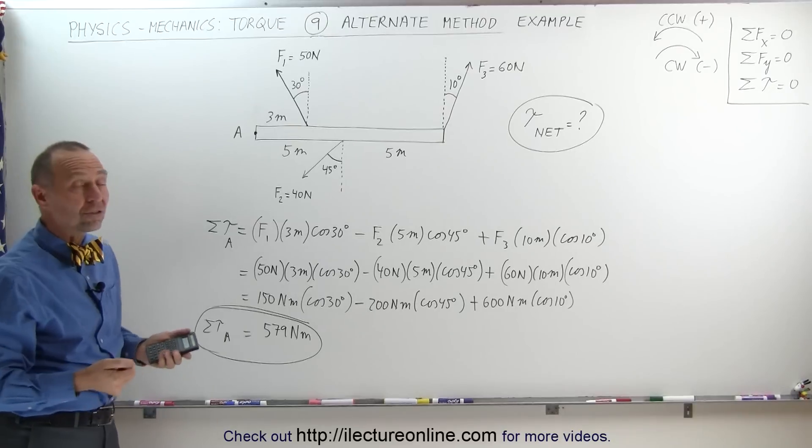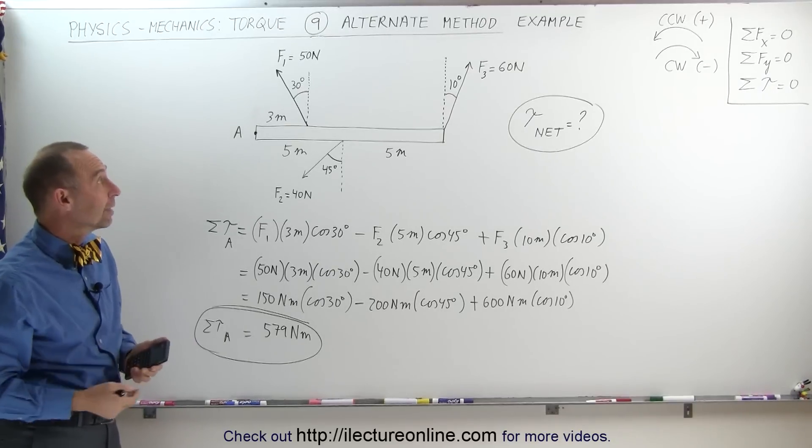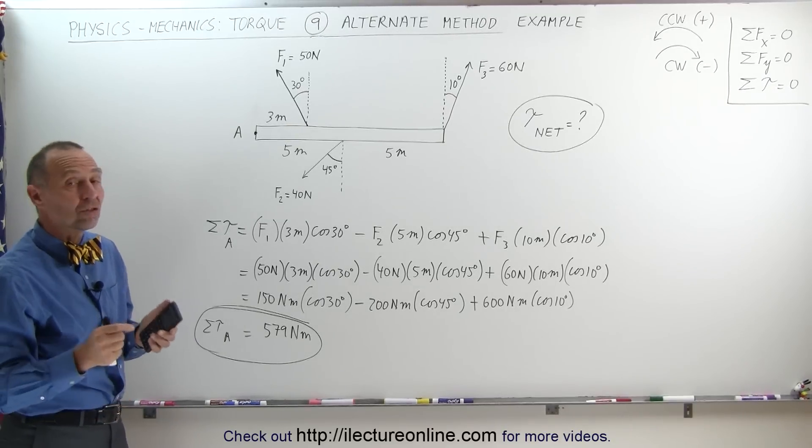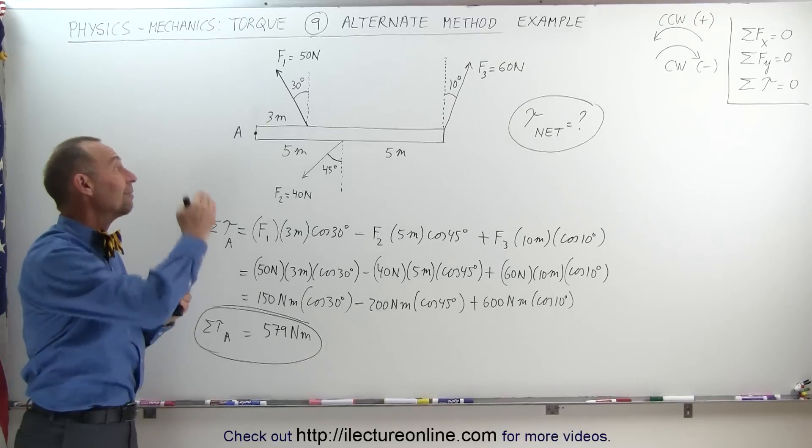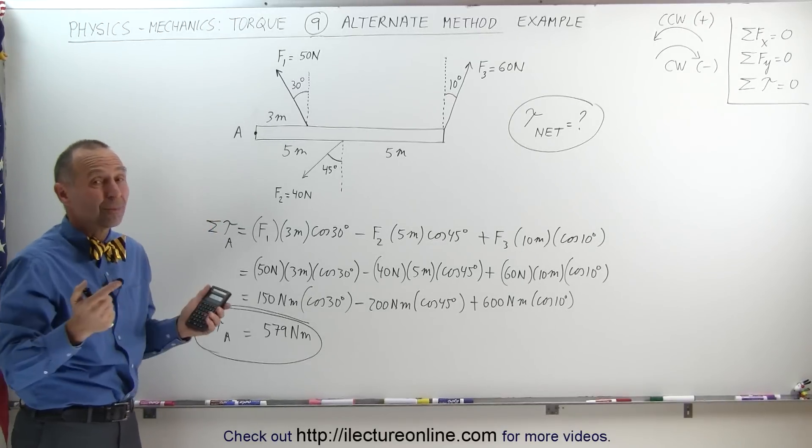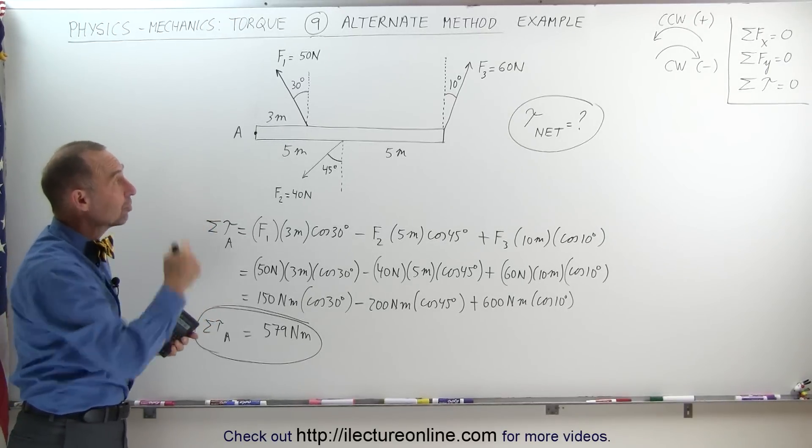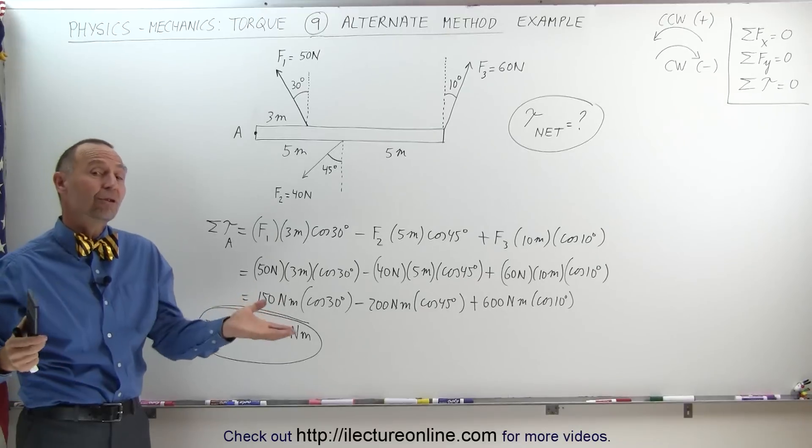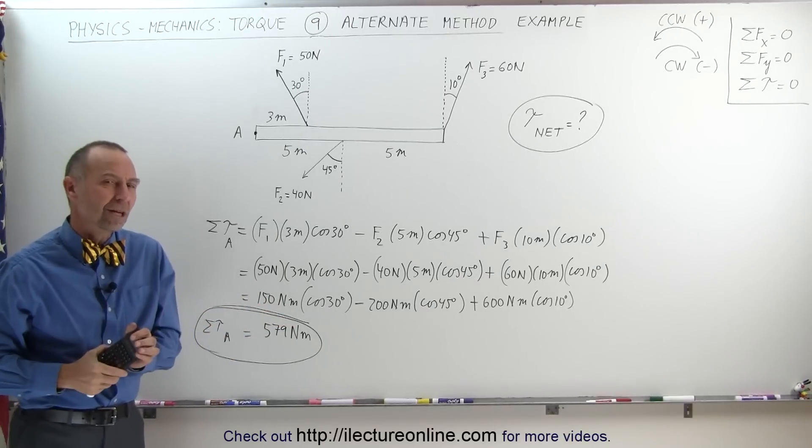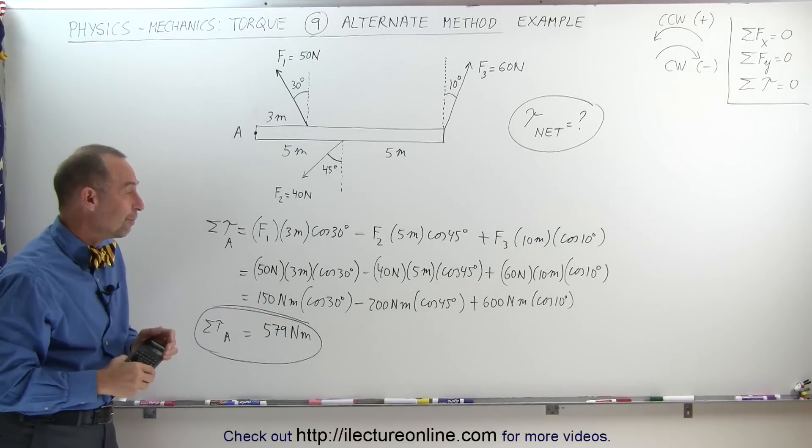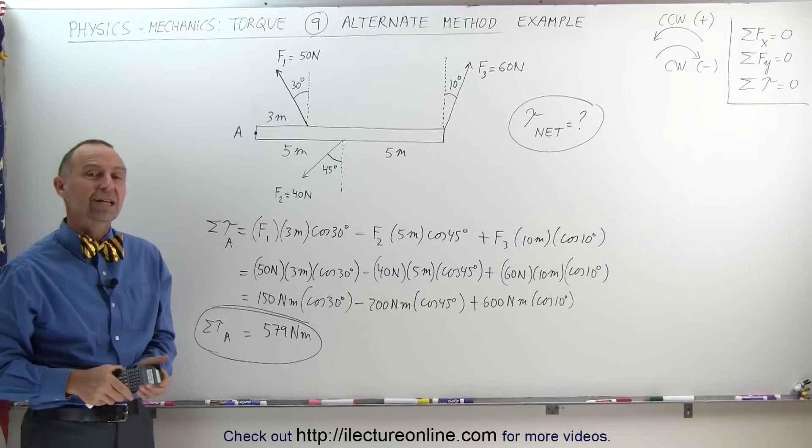And that's how we do that. It's actually quite readily a nice method. Sometimes it's easier to find the perpendicular distance from the line of action of force to the pivot point, but in some cases it's easier to use this method. So now you have two different methods. Use whatever works best for you, but this is how we do that second method.